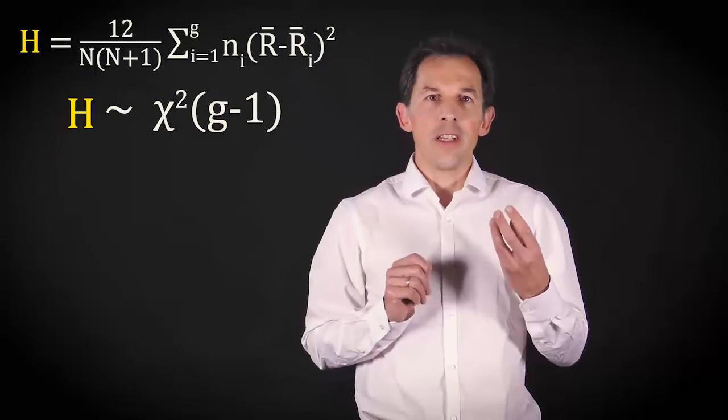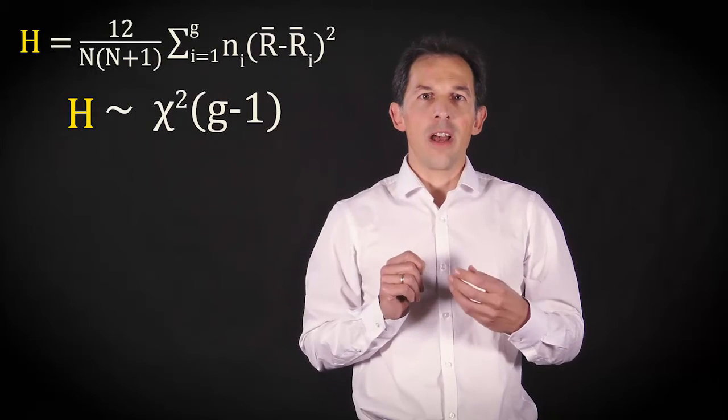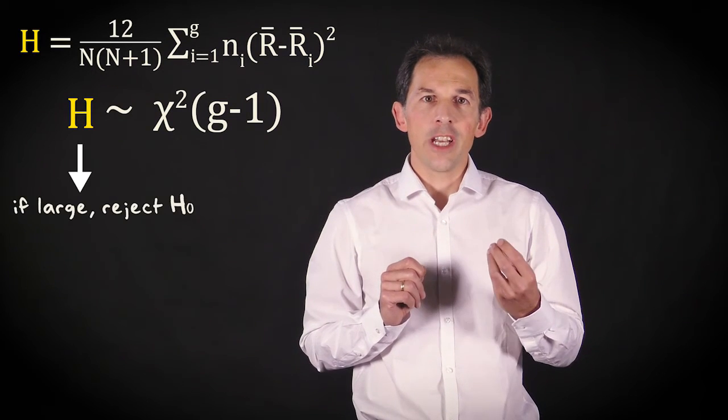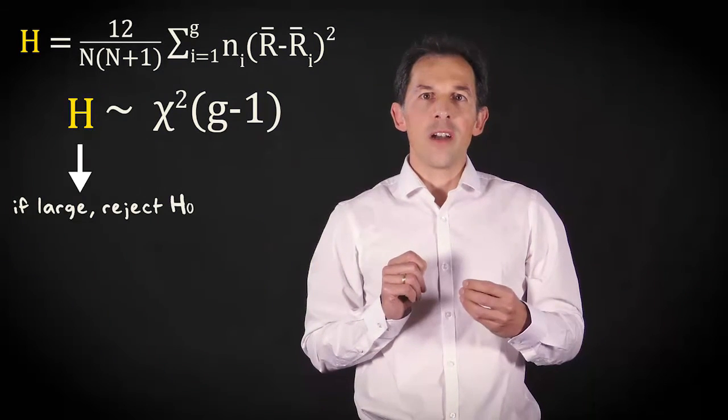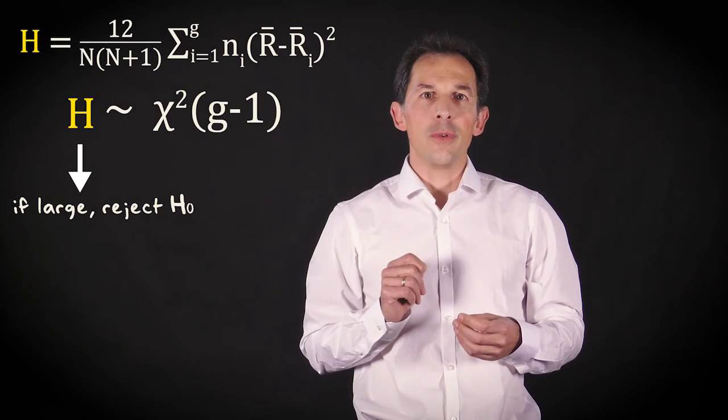The null hypothesis that the different groups have the same underlying population distribution is rejected when the test statistic is larger than the critical value according to this chi-square distribution.